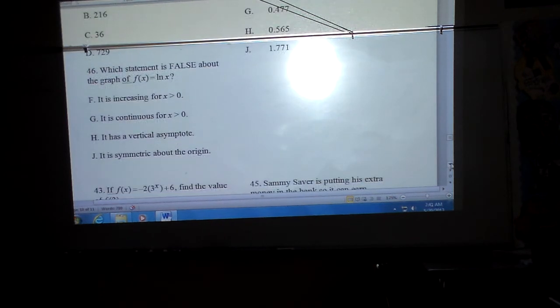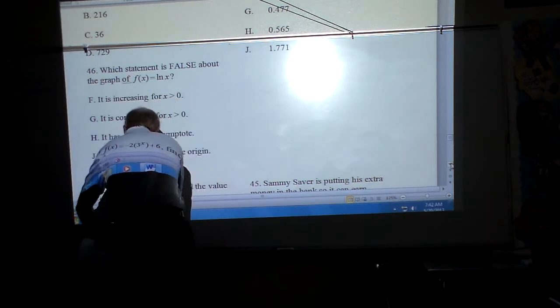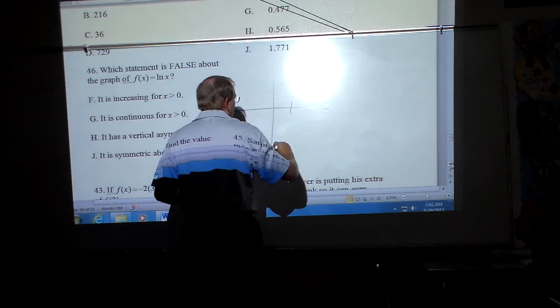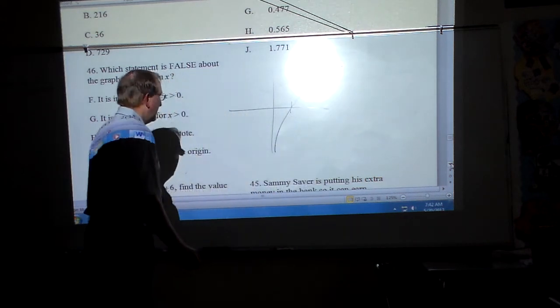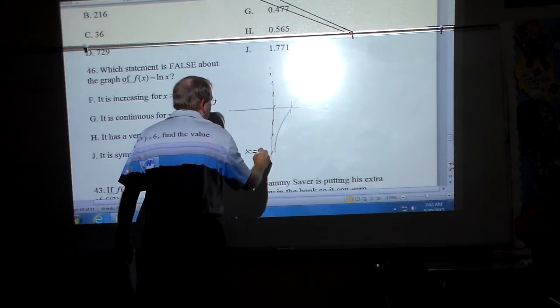It says which of the statements is false about the graph of basically y equals ln(x)? Well, the thing you need to remember is this about the graph of ln(x). You go to calculate it and graph it. It will look like this. It looks like to me there's an asymptote right there at x equals zero.